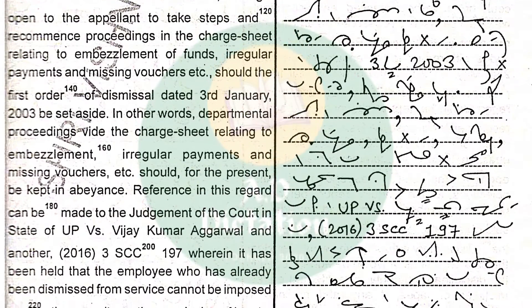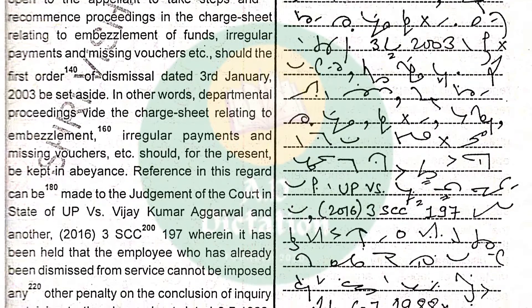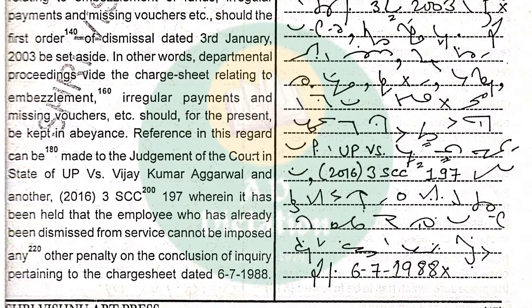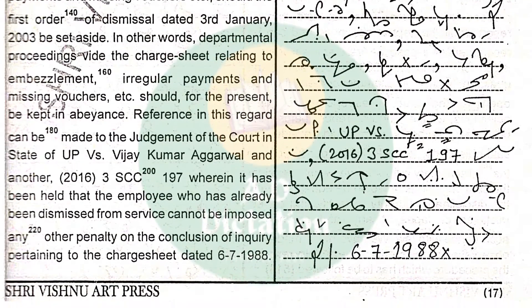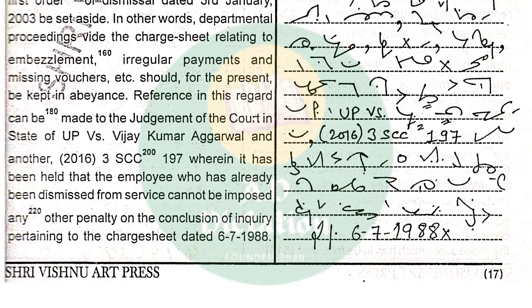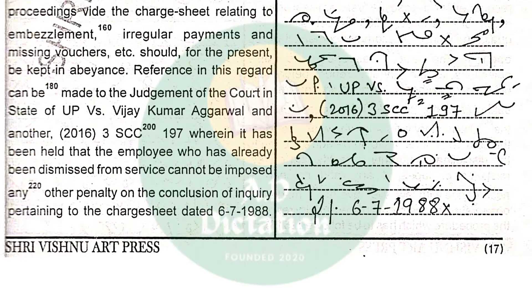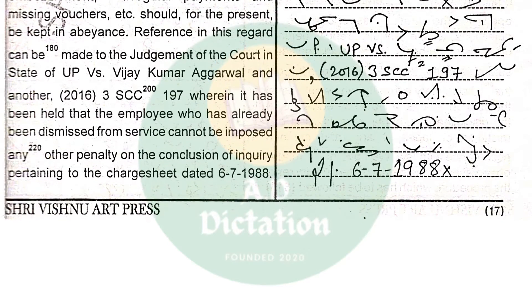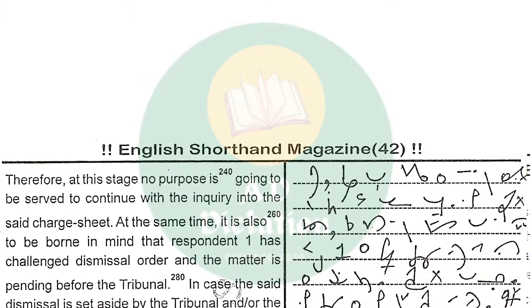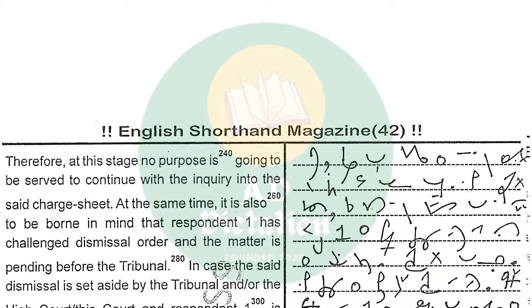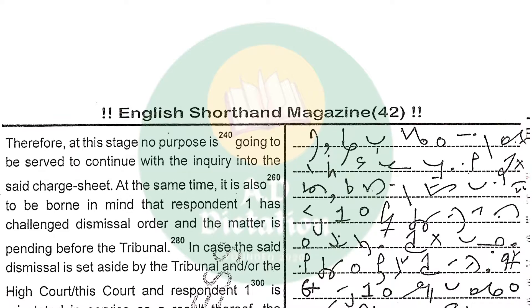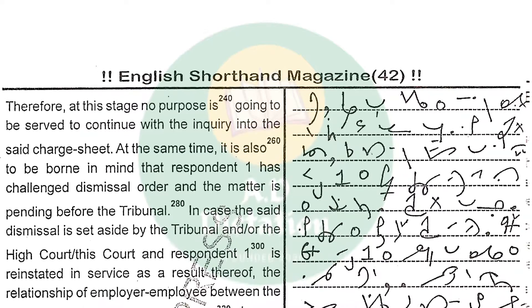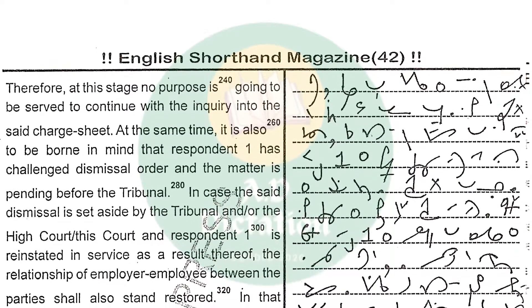should for the present be kept in abeyance. Reference in this regard can be made to the judgment of the court in State of UP v. Vijay Kumar Agarwal and Another, reported as 2016 (3) SCC 197, wherein it has been held that the employee who has already been dismissed from service cannot be imposed any other penalty on the conclusion of inquiry pertaining to the charge sheet dated 6-7-1988. Therefore, at this stage, no purpose is going to be served to continue with the inquiry into the said charge sheet.